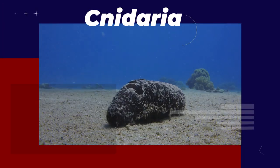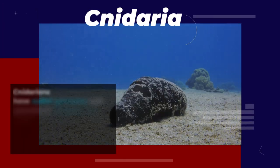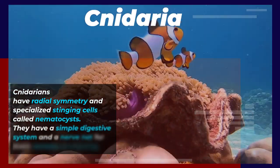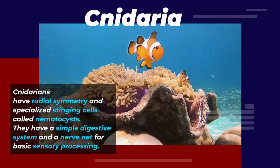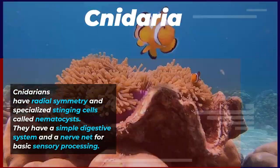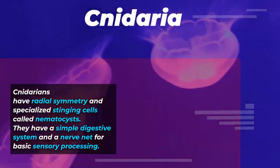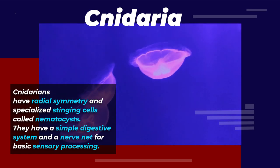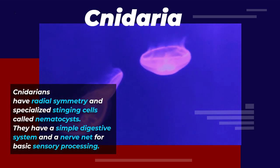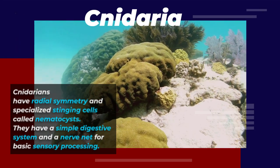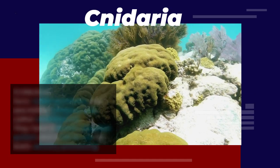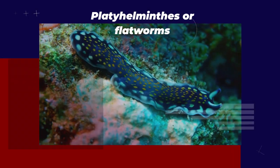The next phylum is Cnidaria, which includes jellyfish, coral, and sea anemones. Cnidarians have radial symmetry and specialized stinging cells called nematocysts. They have a simple digestive system and a nerve net for basic sensory processing.